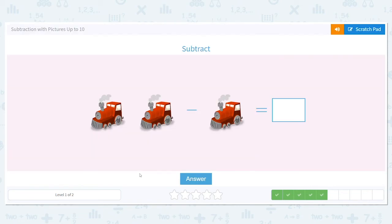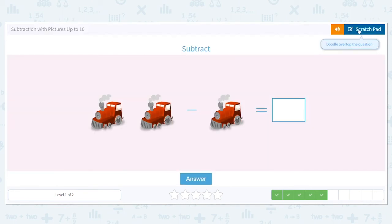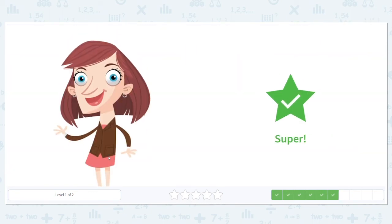Next we have trains. We had a question like this before with the buses so think about it for a moment. We had how many trains? Two. How many here? One. What is two minus one? Good job. It's one. You're rocking it today.